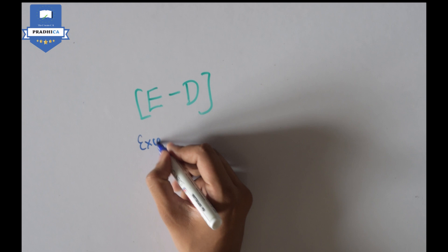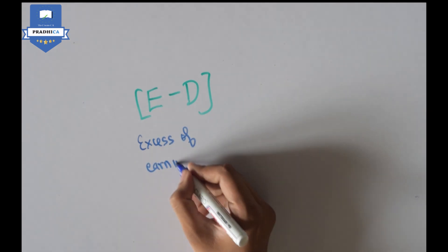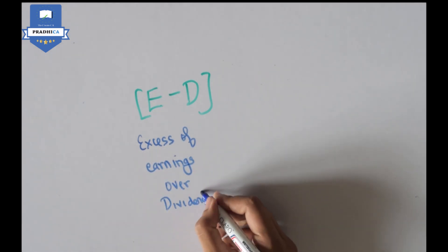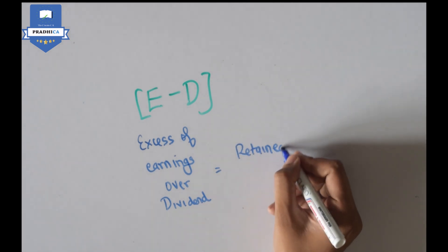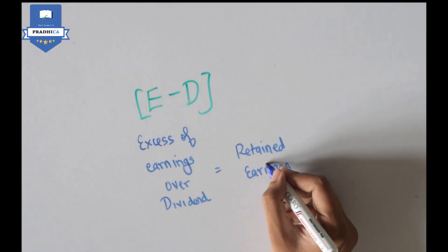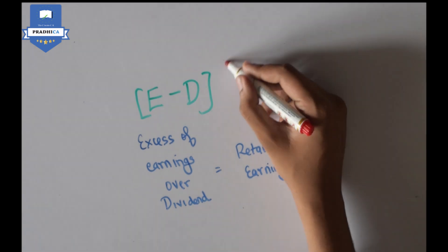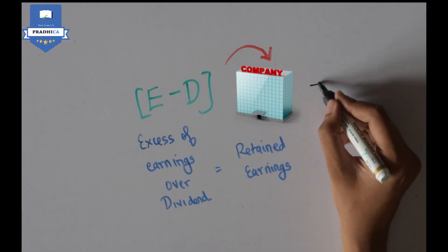The excess of earnings over the dividends paid, which represents the retained earnings in the business, are reinvested by the company at the rate of return of its projects.